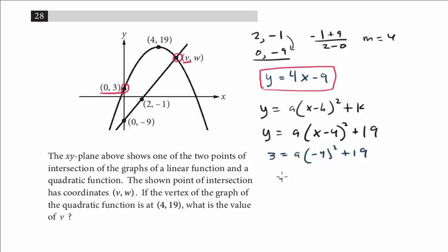So we end up with 3 equals 16a plus 19. Subtract 19 from both sides, so 16a equals -16, and a equals -1. Now we can write out our full equation.